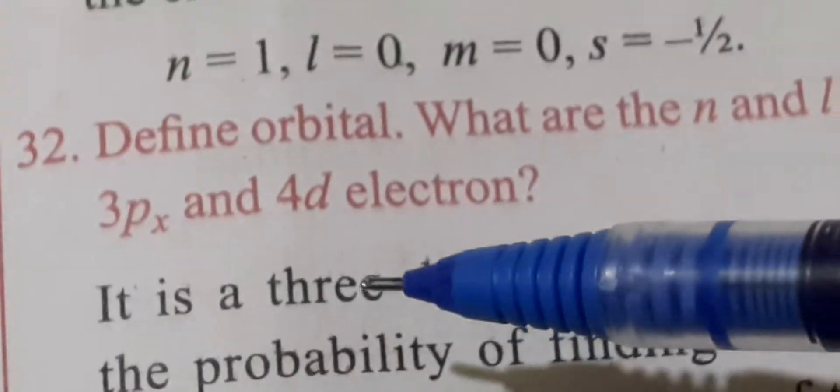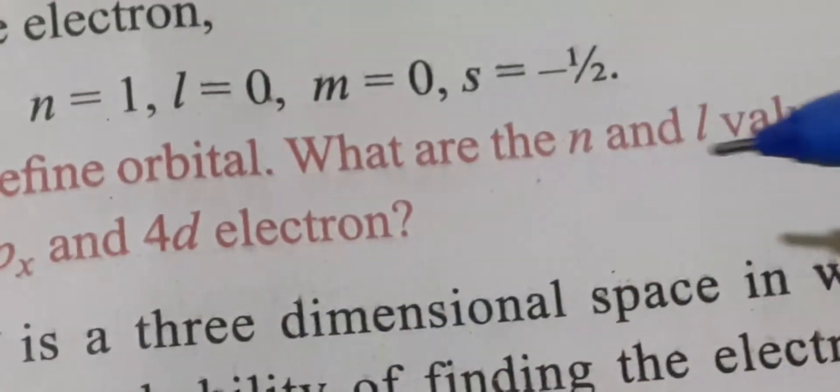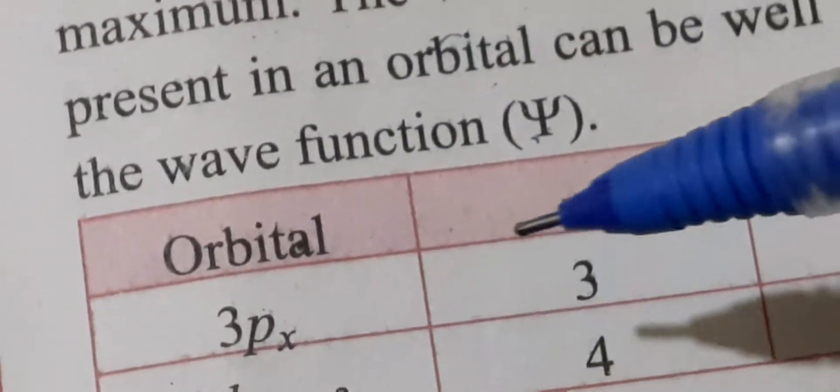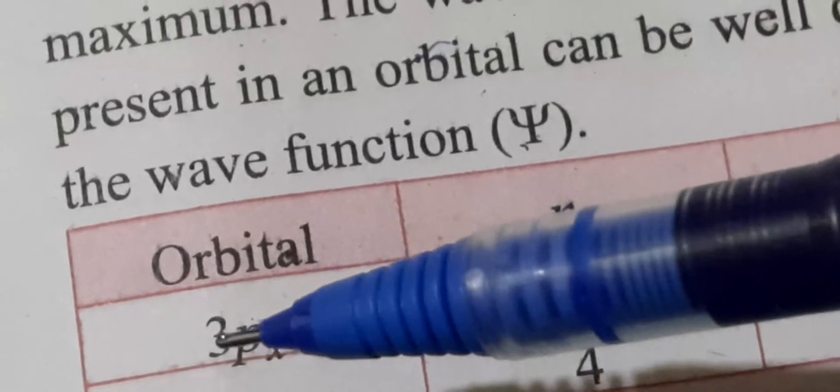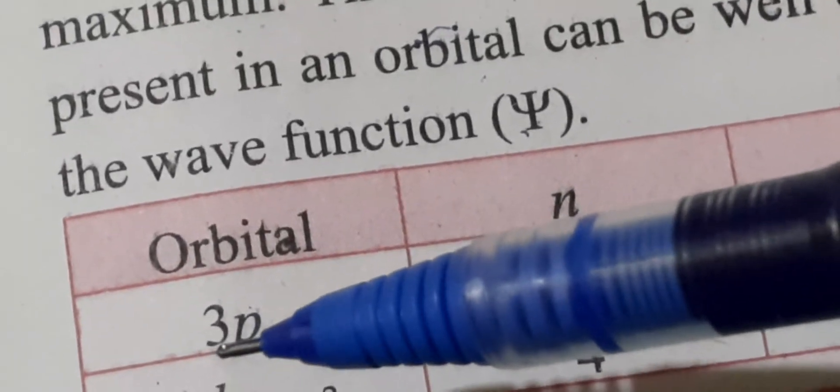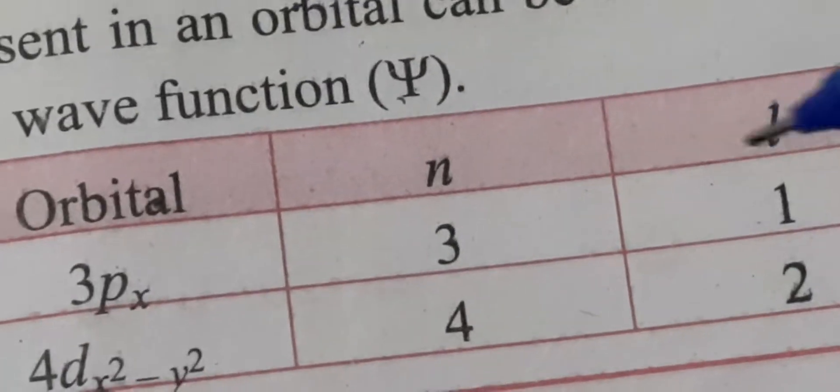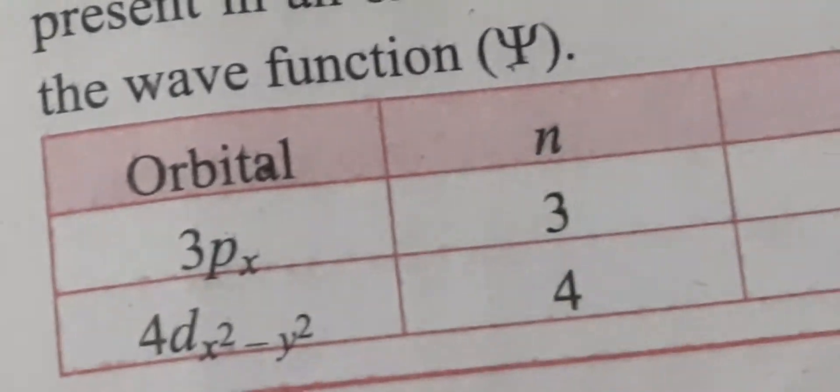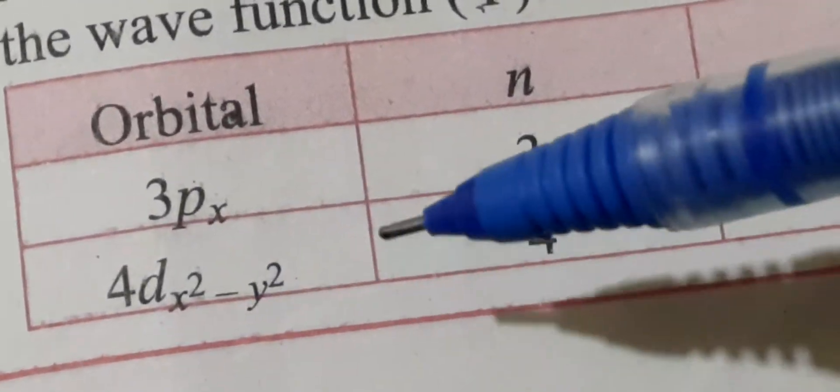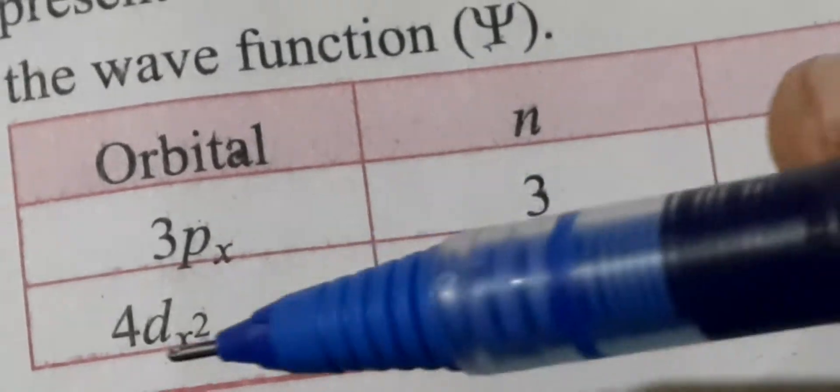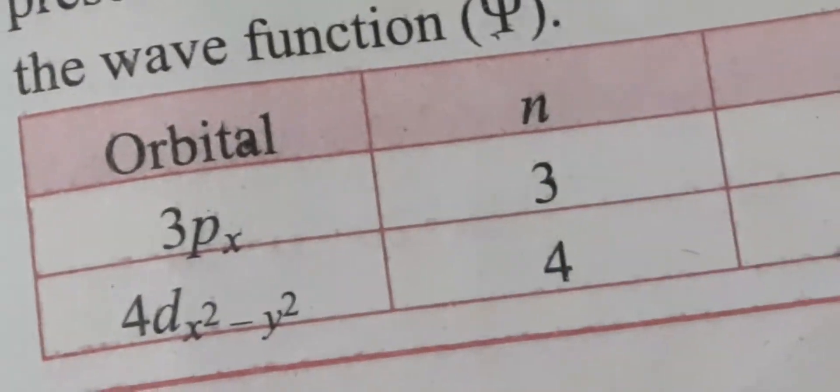For 3px orbital and 4d orbital, the n and l values are: 3px orbital has n-value of 3 (the principal quantum number) and l-value of 1 (for p orbital). 4d orbital has n-value of 4 and l-value of 2 (for d orbital).